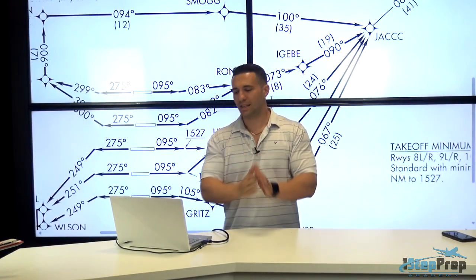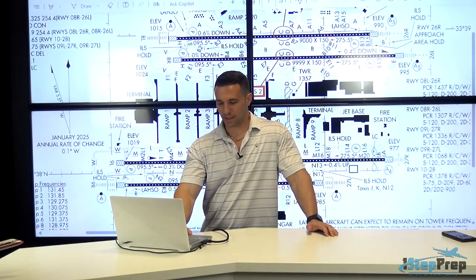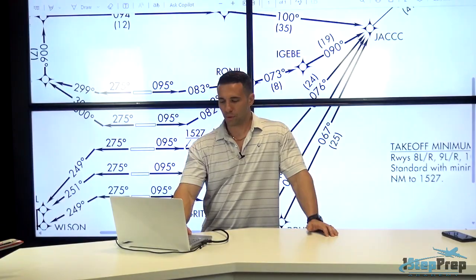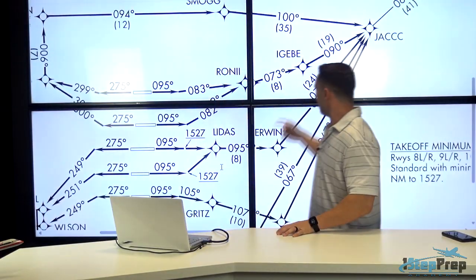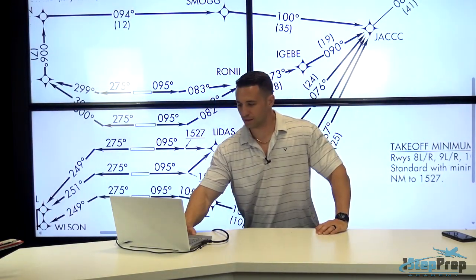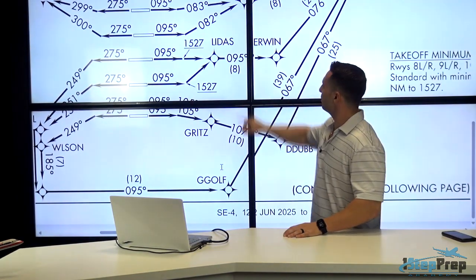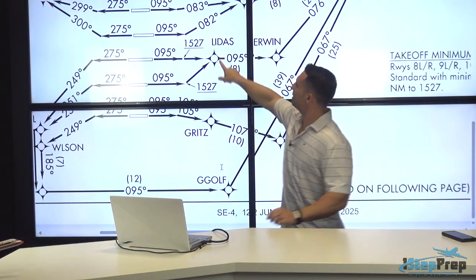And now let's say mistakenly that you did not put 8 right and you happened to put 9 left. Well, the 9 left waypoint is this waypoint over here. Let's put this in position where you can see it, which is LIDAS.